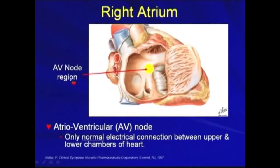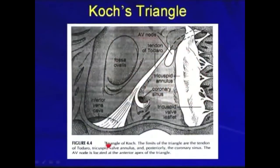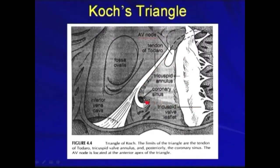Here is the AV node region. This atrioventricular node is the only normal electrical connection between the upper and lower chambers of the heart. The picture depicts the Koch triangle, which is bounded by the tendon of Todaro, the tricuspid valve leaflet, and the coronary sinus. The AV node is located at the anterior aspect of the triangle.